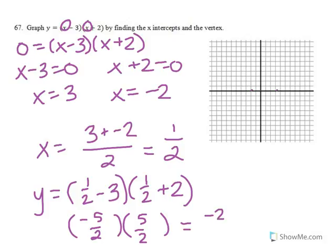When I multiply these, I get negative 25 over 4. So my vertex is 1 half, negative 25 over 4, which is negative 6 and 1 quarter.